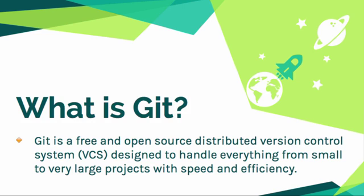So what is Git? Git is a free and open source distributed version control system, just like we talked about version control. And it's designed to handle everything. So if you have a very small project, no problem. I tend to work with other people and collaborate, but I also do a lot of projects just by myself. It makes sense for that as well. So you can be a single proprietor doing this for yourself, or you can be Google and use this as well. And it's meant to have good version control with speed and efficiency.